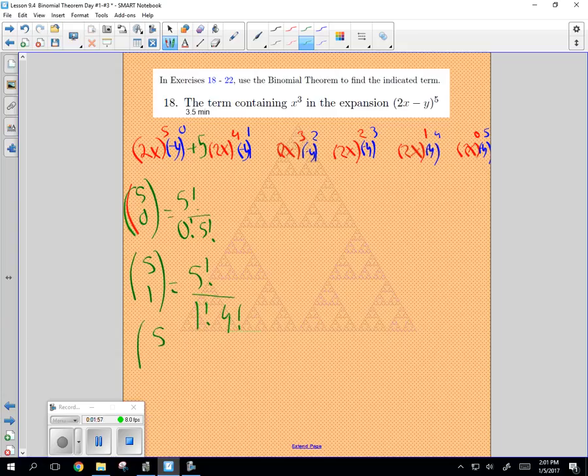How about 5 choose 2? 5 factorial over 2 factorial over 3 factorial. And this is going to be 5 times 4 times 3 factorial over 2 factorial and 3 factorial. These cancel out. What's 20 divided by 2? 10. And then this is going to also be 10. This is going to be 5. And this is going to be 1.